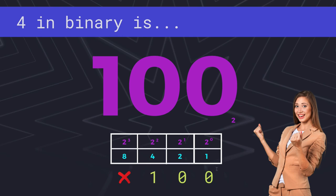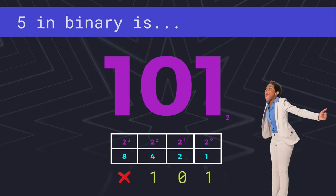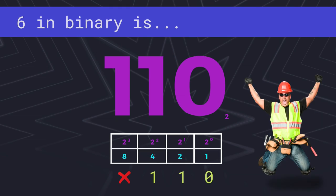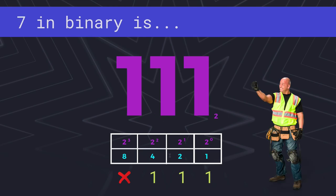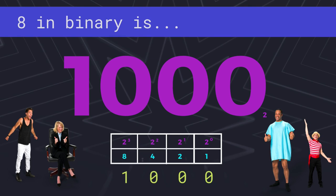4 is going to be 1, 0, 0. 1, 4 plus 0, 0. So 1, 4 is just 4. Here we have 5, 4 plus 1. And 6, 4 plus 2, and no 1. 7, 4 plus 2 plus 1, that gives us 7. And finally, 8. We've got 1, 8, and 0, 4, 0, 2s, and 0, 1s, so it's just 8. And you can see how much longer this is compared to the 8 in decimal, but they are equivalent in value.